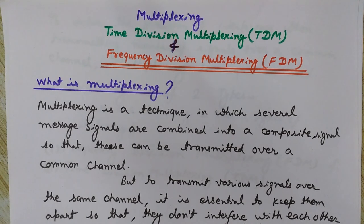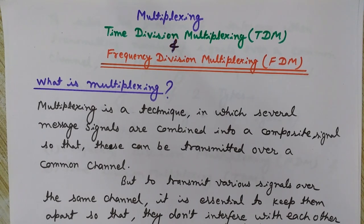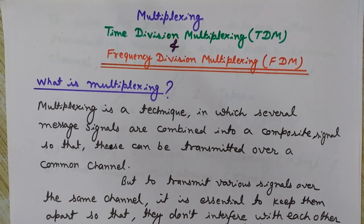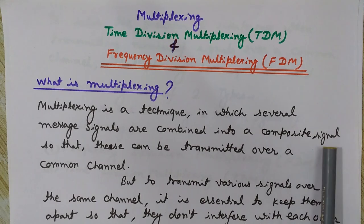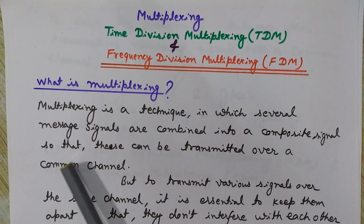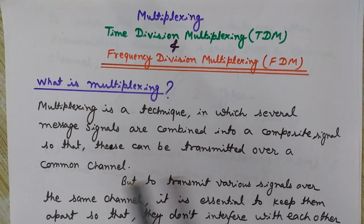Hi, welcome to Engineering Made Easy. Today we will see what is multiplexing. Multiplexing is a technique in which several message signals are combined into a composite signal, so that these can be transmitted over a common channel.